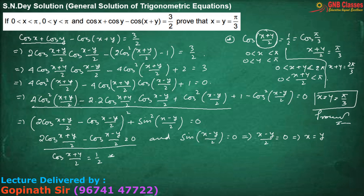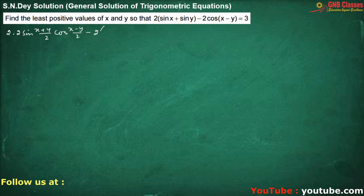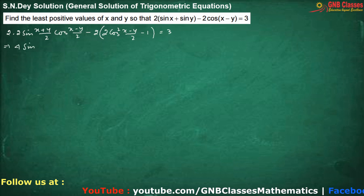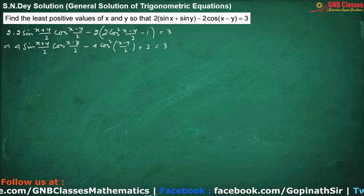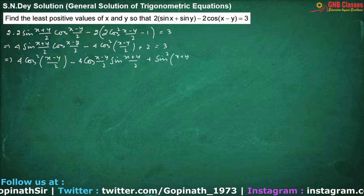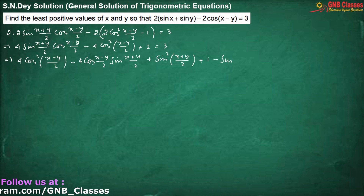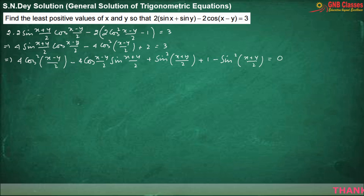This problem is the same as the previous one with a different flavor. We have been given 2(sin x + sin y) - 2cos(x - y) = 3. Applying the sin C + sin D formula and writing cos(x - y) using the identity, we take everything to the right-hand side.